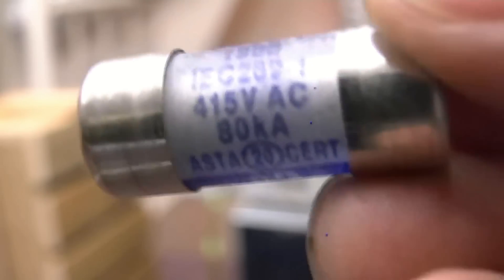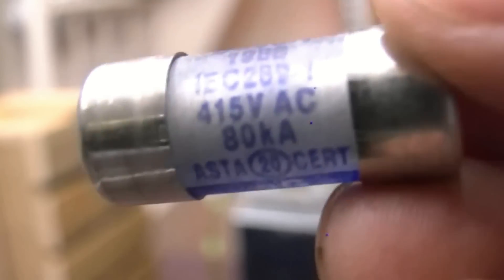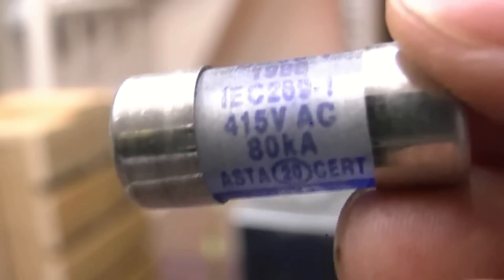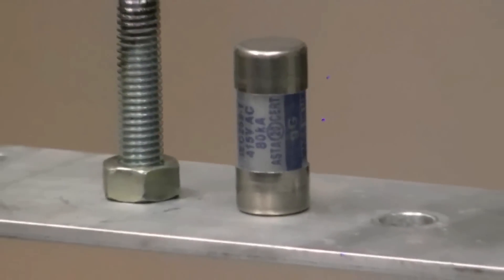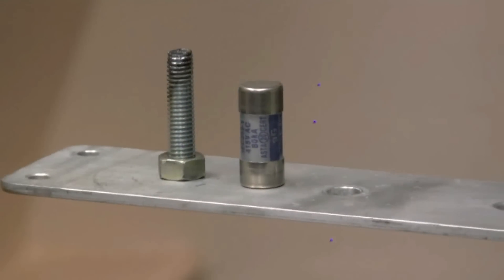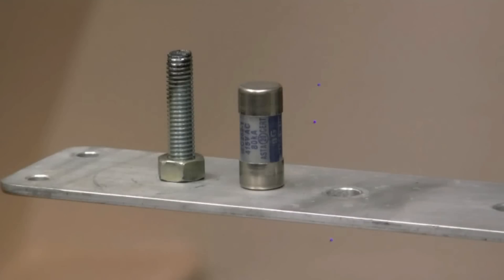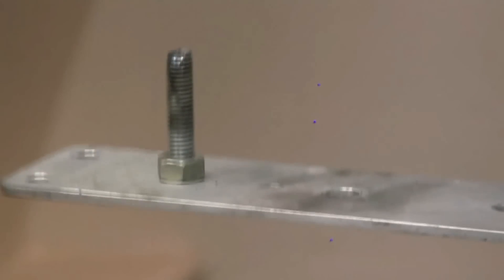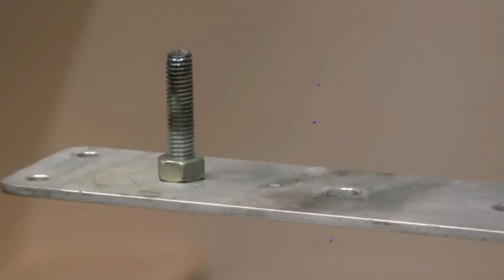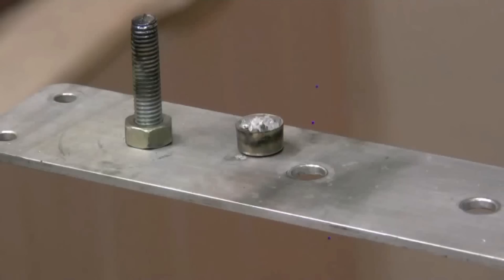This fuse has got a rupture current of 80,000 amps. I want to see if we can make it burst. That would be nice, wouldn't it? Let's give it a go. Absolutely annihilated it. Bits of it everywhere. That there is the end cap. I don't know where the rest of it went, to be honest. I found that bit on the floor. But we know we've got more than 80,000 amps to rupture that fuse. I'm happy with that.